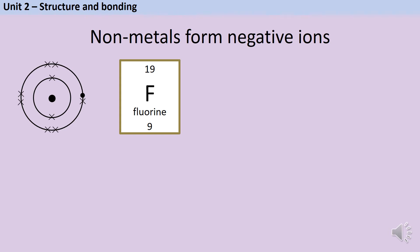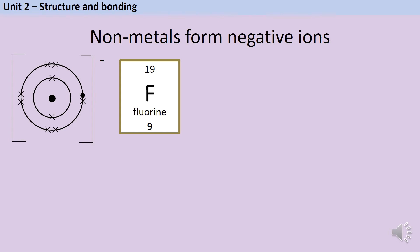That electron we've just added has a single negative charge, which means that instead of having an uncharged atom, we now have a charged particle that we call an ion. To show that the negative charge is spread all over the ion, we surround it with square brackets and put a minus sign to show the negative charge.